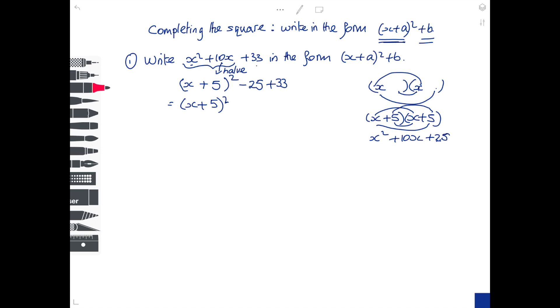So in the next line write down the (x+5)² again, and then work out the little sum that's here. So it's minus 25 plus 33 which gives you plus 8. And there's the answer, it's written in the form (x + a number)² + a number.